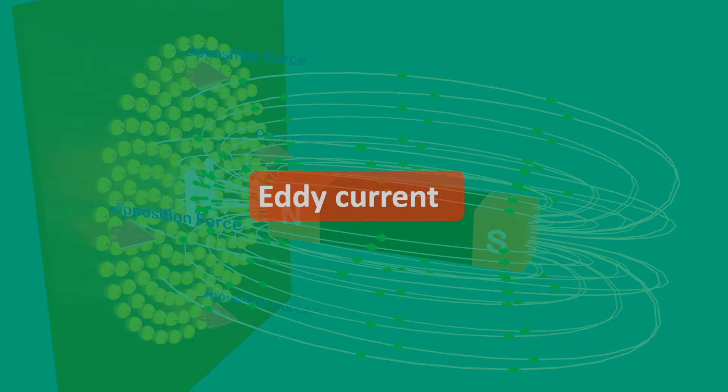So far, we have studied the electric currents induced in a well defined path like circular path. But what if magnetic flux will change through a conducting plate in which there is not a well defined path for induced current to flow.